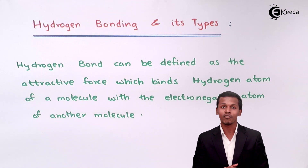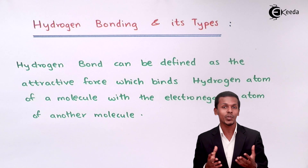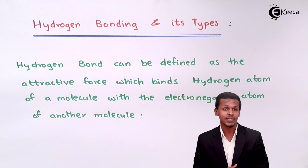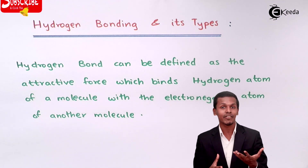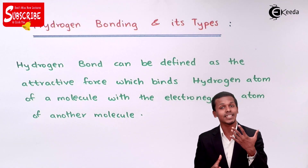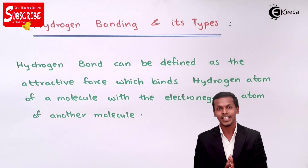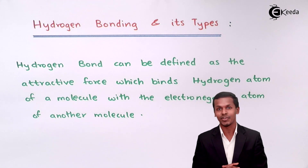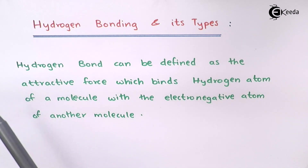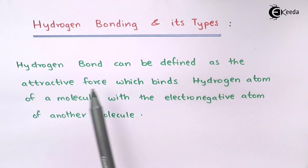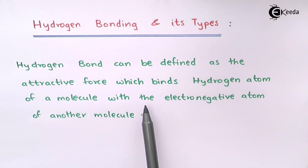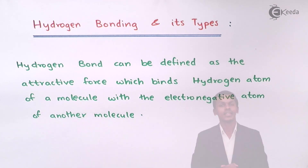Actually, hydrogen bonding is a special kind of bond that takes place between two molecules which have an electronegativity difference. Because of this electronegativity difference, it is a kind of attraction that takes place between the two molecules. Hydrogen plays a very vital role in this attraction. The hydrogen bond can be defined as the attractive force which binds a hydrogen atom of one molecule with the electronegative atom of another molecule.